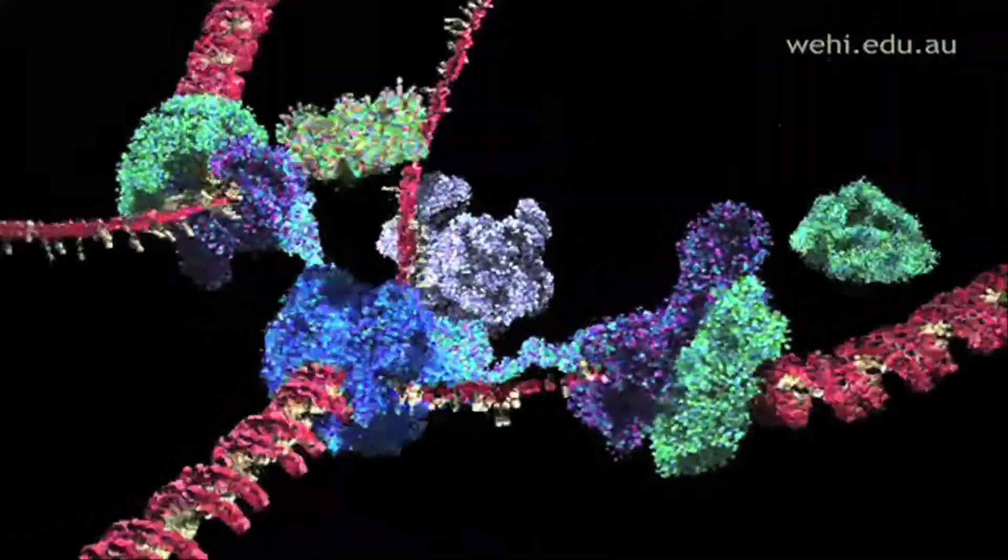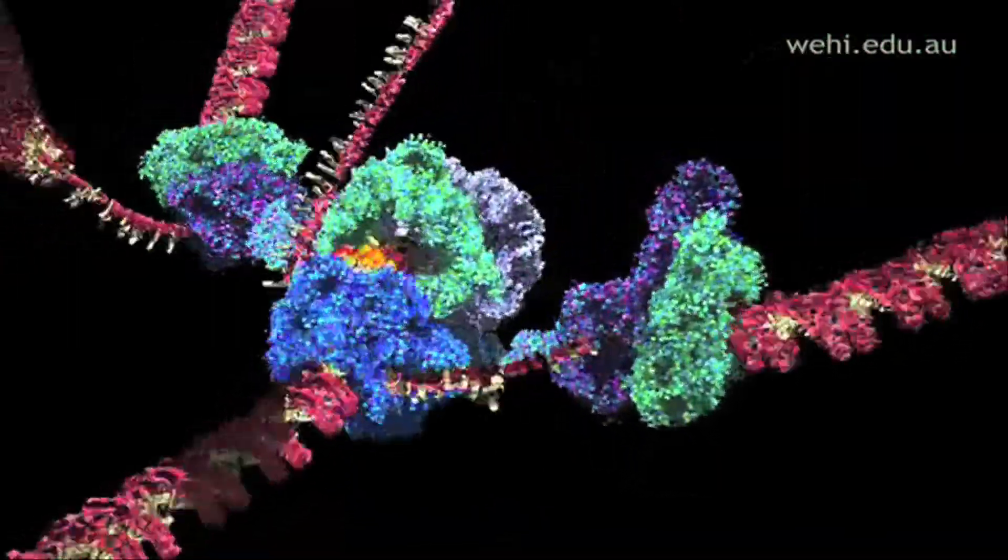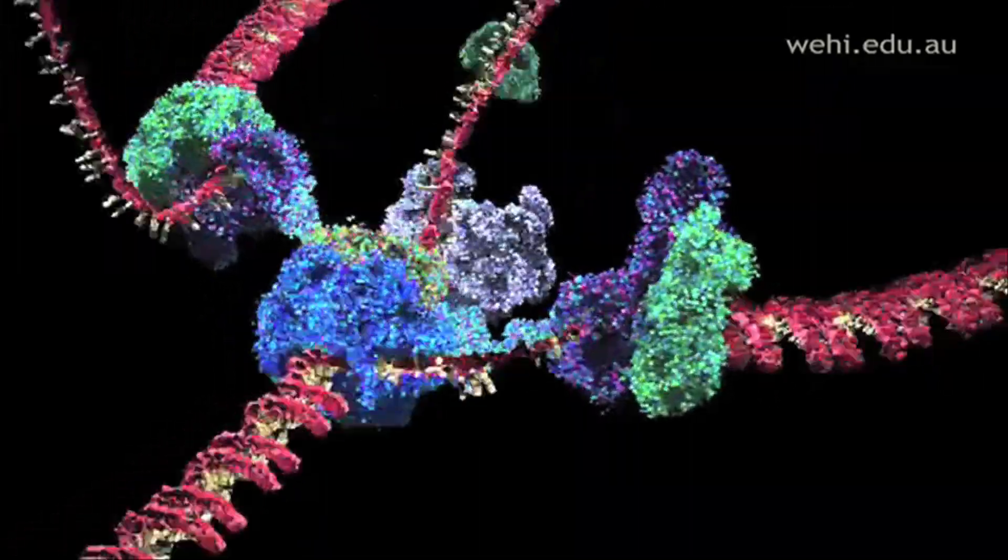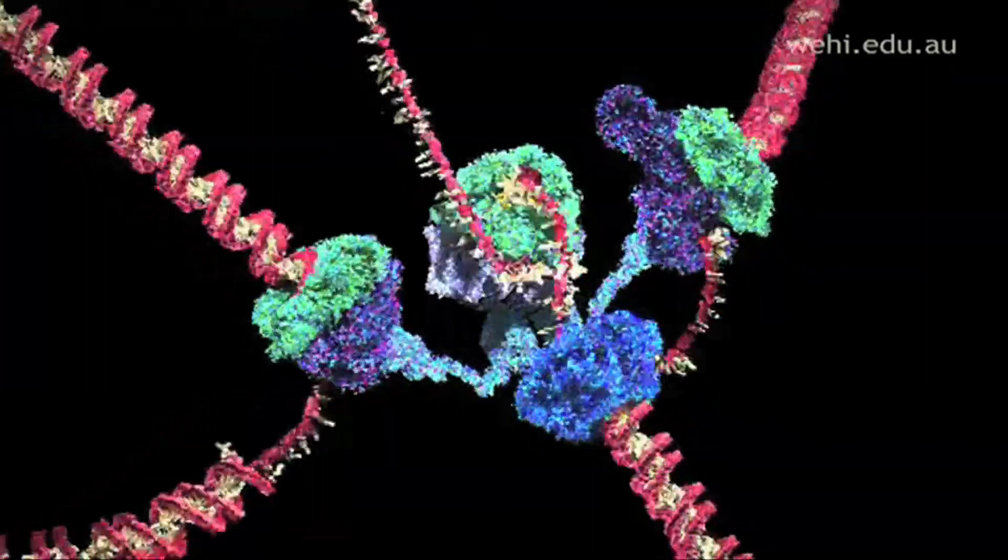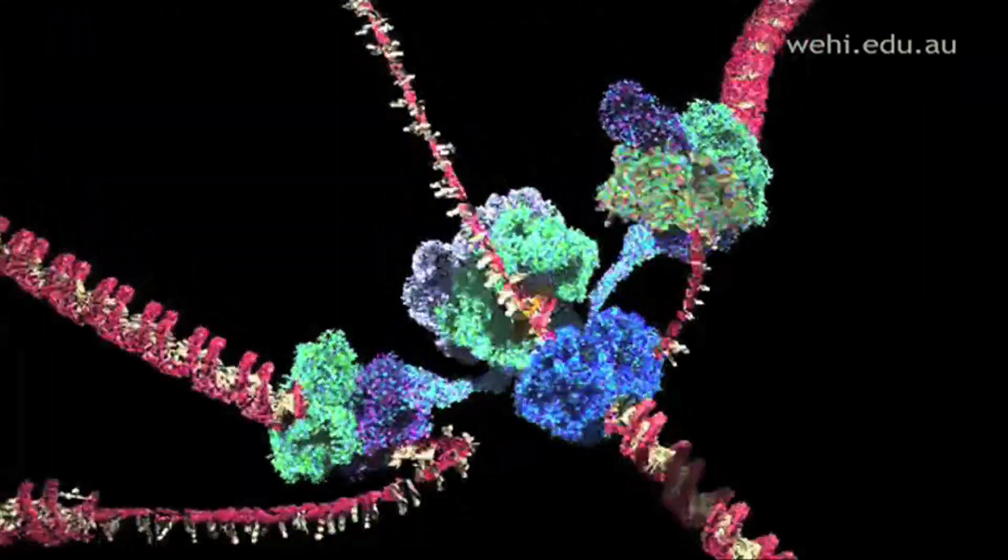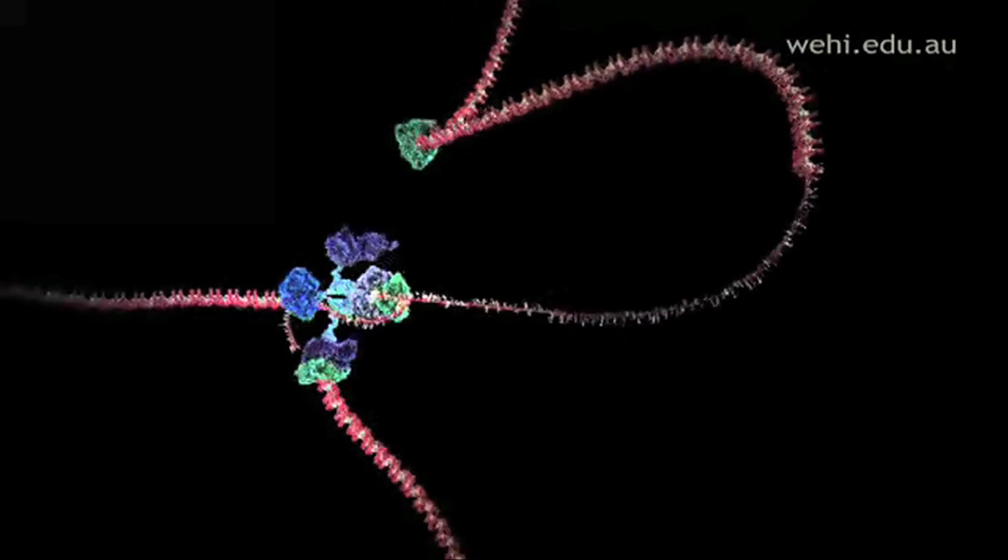One strand is copied continuously and can be seen spooling off to the right. Things are not so simple for the other strand because it must be copied backwards. It is drawn out repeatedly in loops and copied one section at a time.